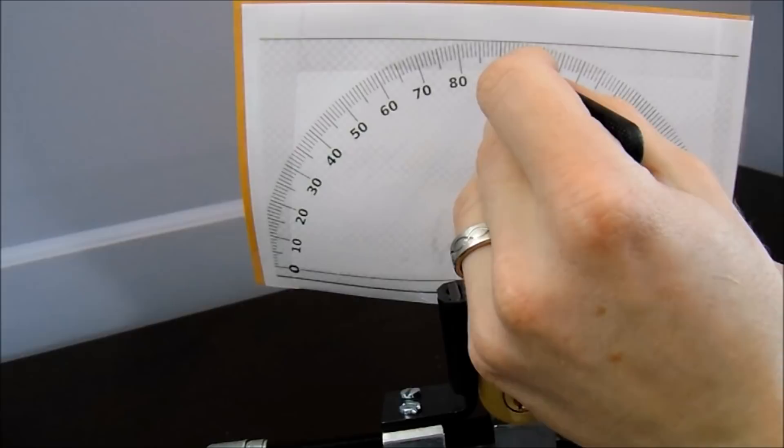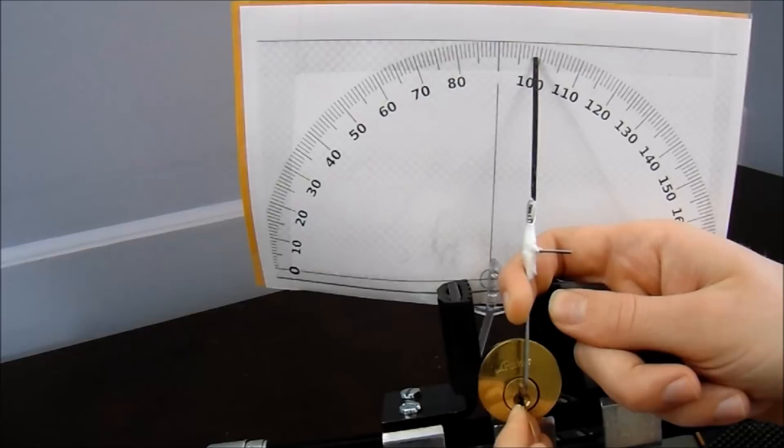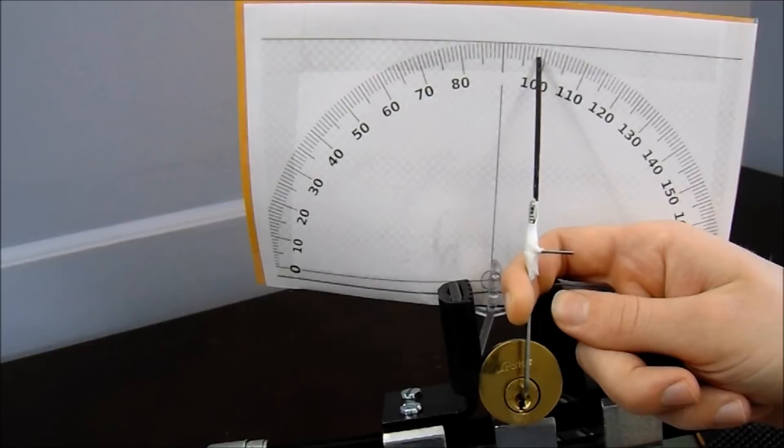You can see we went from about the 90 degree mark to the 100 degree mark. What we're going to need to do is now probe our lock for some counter-rotation to find the spool pin that we're on.